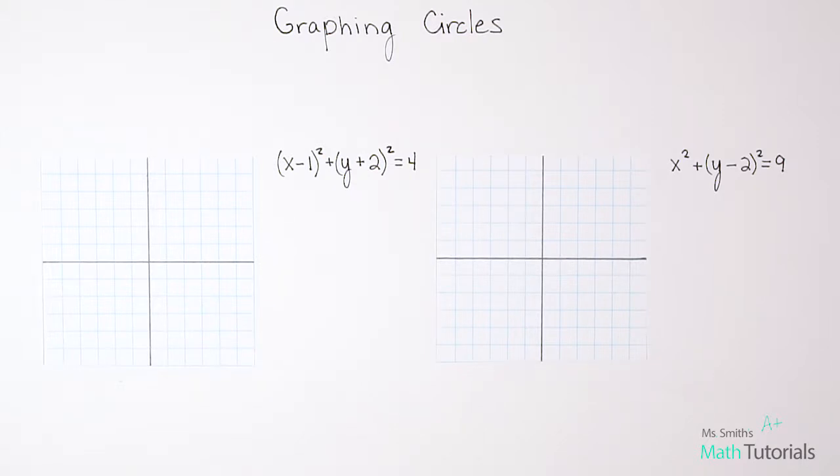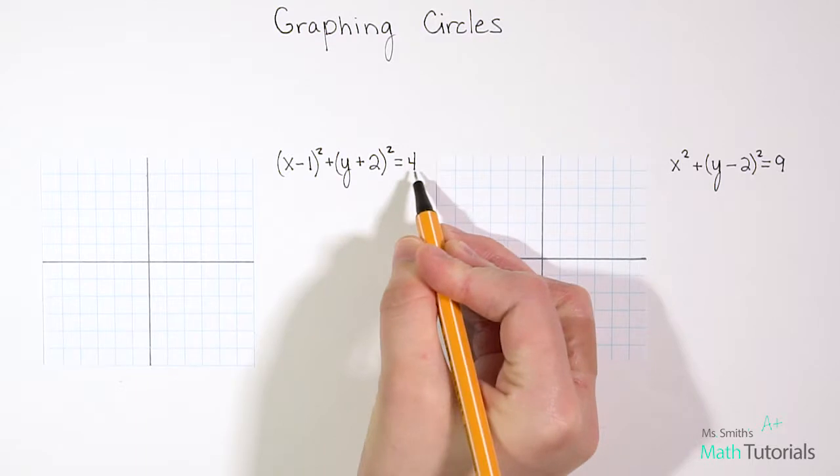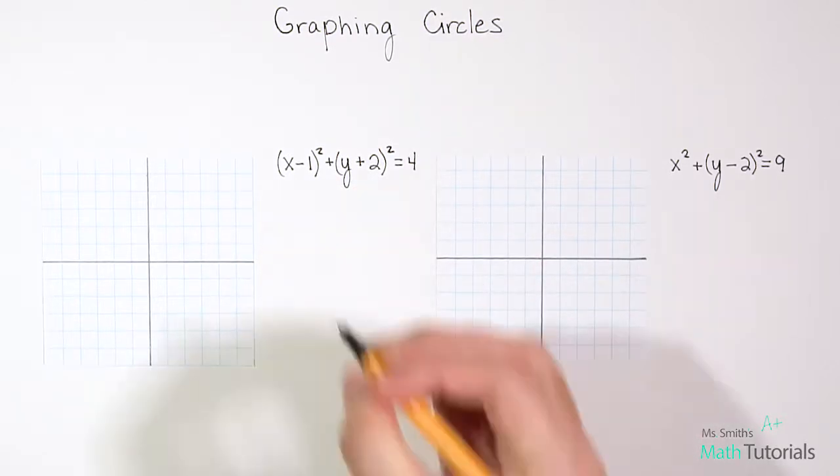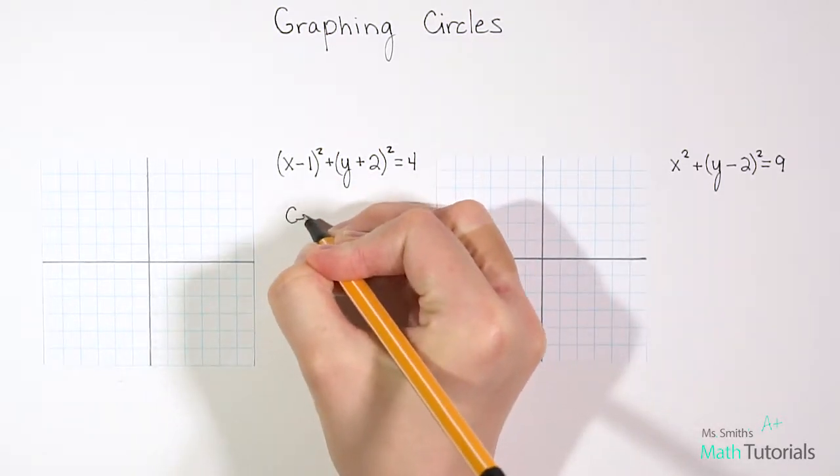But for just the basics of graphing circles, we need to know two things. We need to know the center of the circle and we need to know the radius. And both of those things can easily be found in our traditional standard form of a circle.